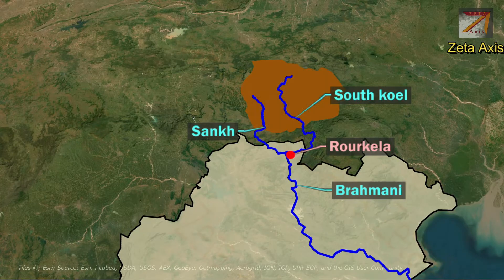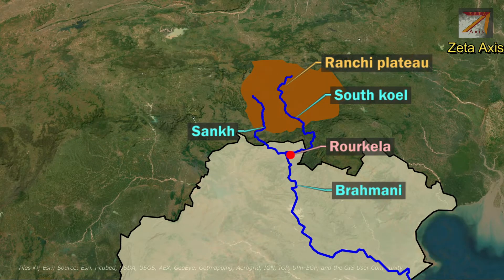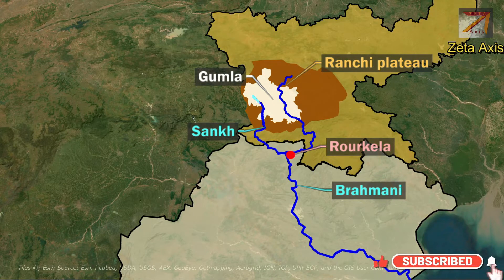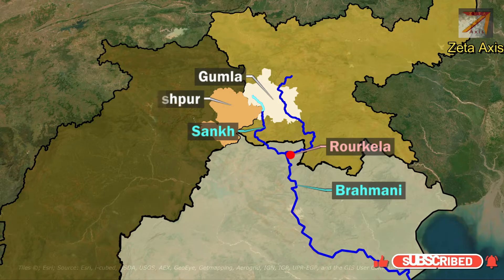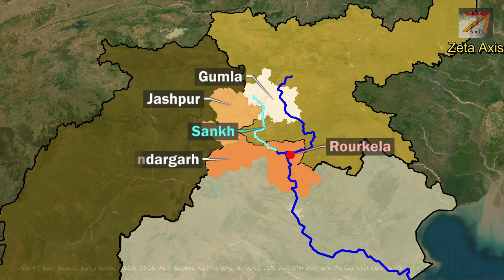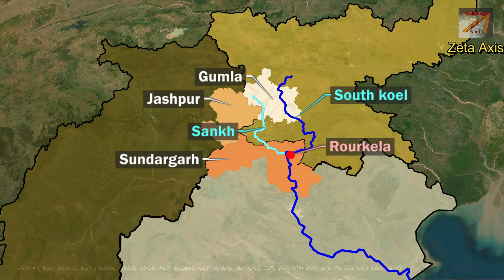The Sankh river originates from the Ranchi Plateau of Chota Nagpur Plateau in Gumla district of Jharkhand. The Sankh flows from Jharkhand, then enters Jashpur district of Chhattisgarh, and re-enters Jharkhand. From Jharkhand, the Sankh river enters Odisha in Sundargarh district, where it joins the South Koyal river near Rourkela to form the Brahmani river.